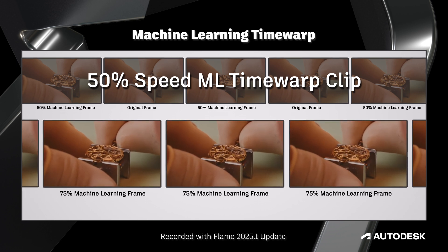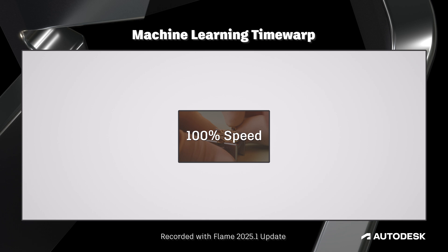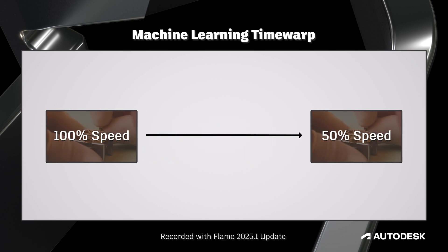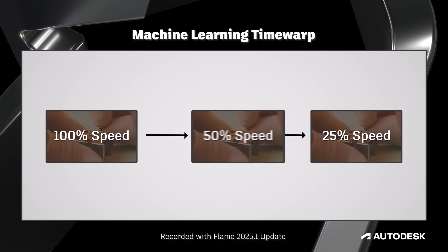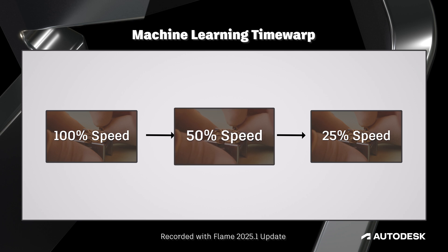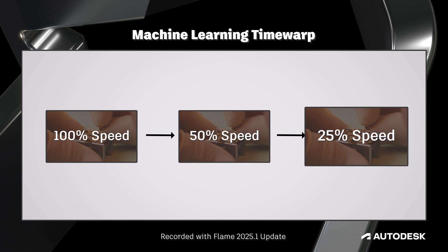What all of this means to you comes down to render times. When it comes to generating new frames, a 50% Time Warp will always be the fastest, since it's just one interpolation calculation. A 25% Time Warp will be a little slower than a 50% Time Warp, since it's performing two jumps — one to 50% and one to 25%.